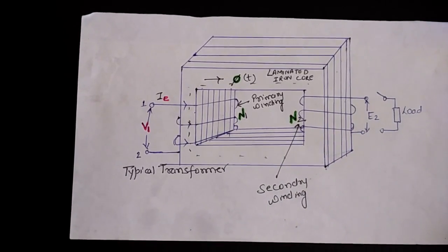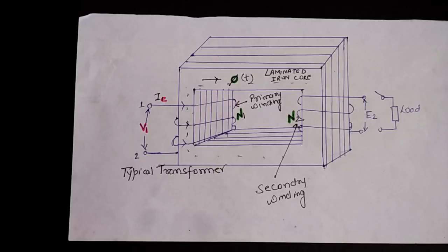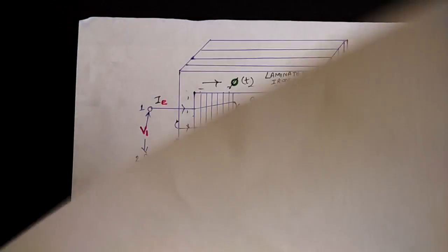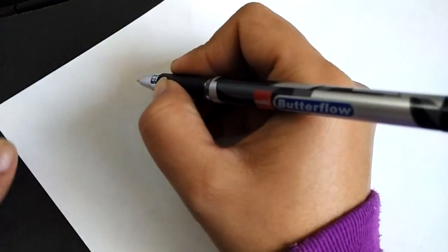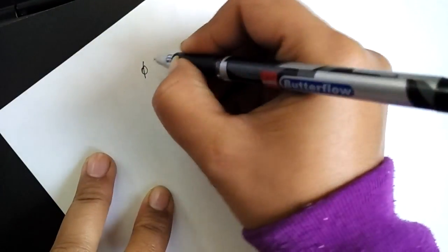Now if we go for the EMF equation, here you can write the flux phi. Phi is a sinusoidal quantity. As V1 is sinusoidal, the flux generated will also be a sinusoidal quantity.